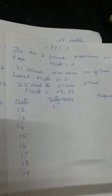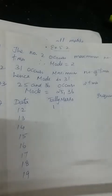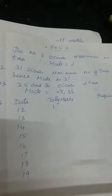Now the third one. The age in years of 11 cricket players are given. Find the mode of their ages. In some cases two numbers will be repeating the same number of times. So your answer will have two numbers.